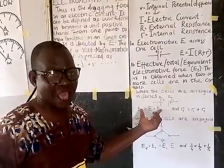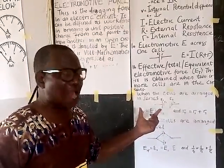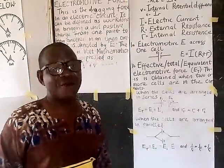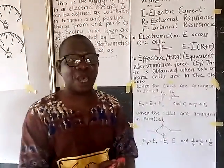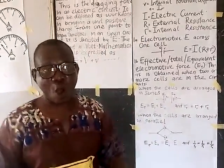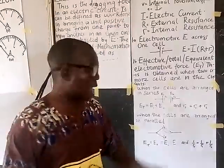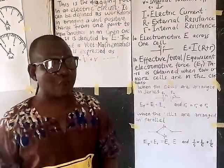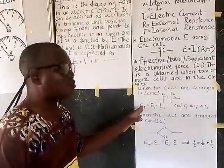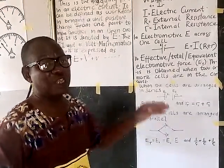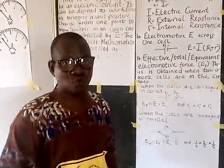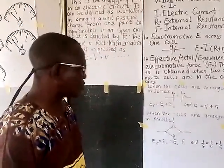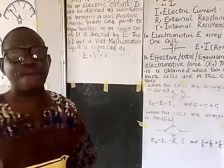Because there are two cells, there are two internal resistances. Using the series arrangement, effective internal resistance RT = R1 + R2, and effective electromotive force ET = E1 + E2. That is how series combination works.